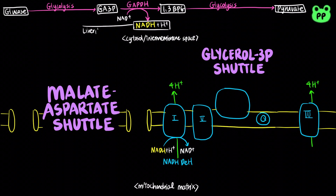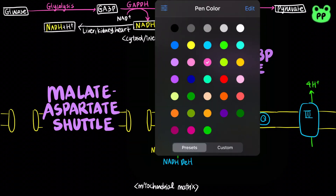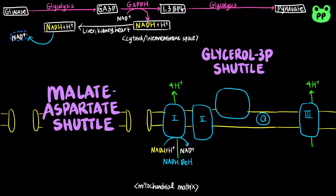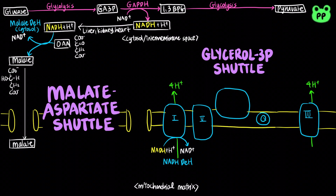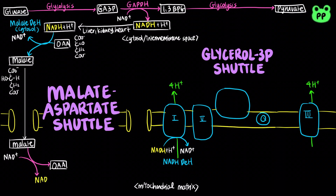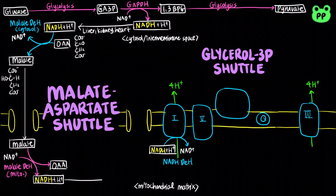The malate-aspartate shuttle is used by liver, kidney, and heart mitochondria. The cytosolic NADH is first oxidized by malate dehydrogenase, which is coupled to the reduction of oxaloacetate to malate. The malate formed then passes through the inner mitochondrial membrane and gets converted back into oxaloacetate by malate dehydrogenase, reducing NAD+ to NADH. The NADH is now free to enter complex I of the electron transport chain.